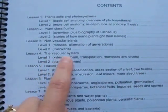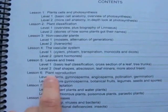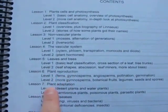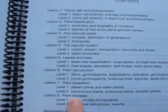Level 1 covers plant cells and photosynthesis. Level 2 is on plant classification. Lesson 3, non-vascular plants. Lesson 4, the vascular system. Lesson 5, leaves and trees. Lesson 6, plant reproduction. Lesson 7, plant adaptation. And Lesson 8, plant diseases.